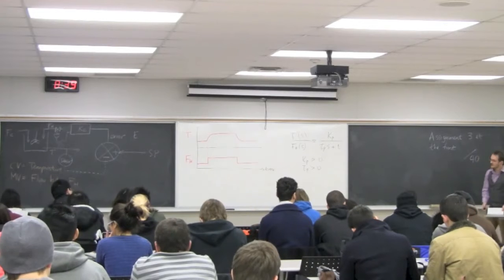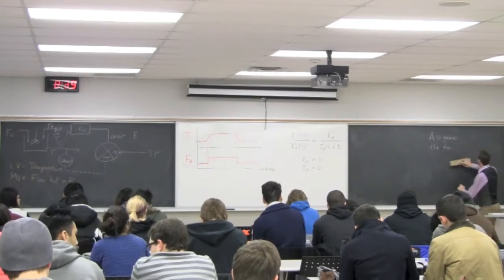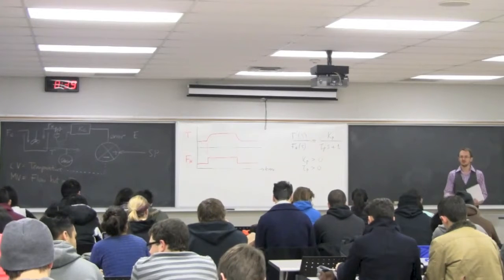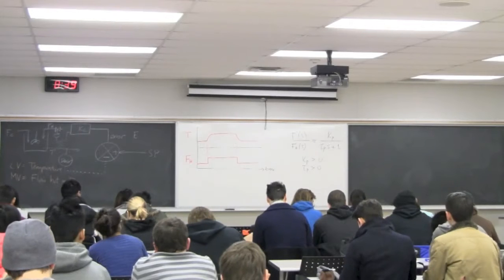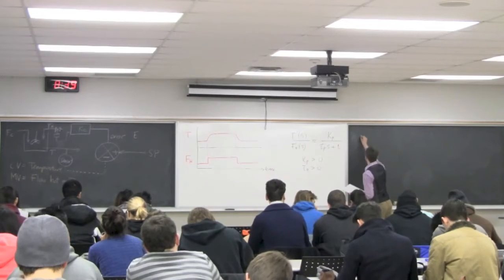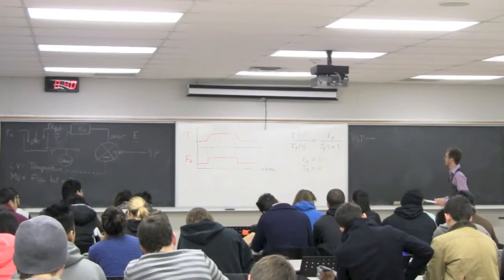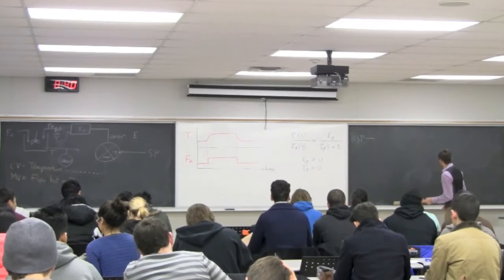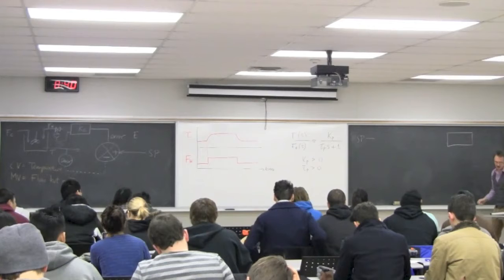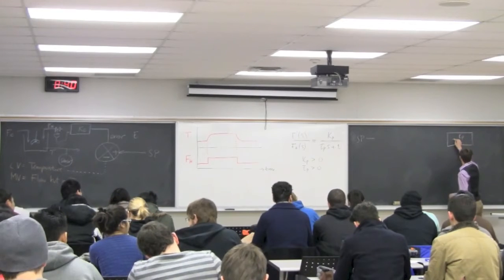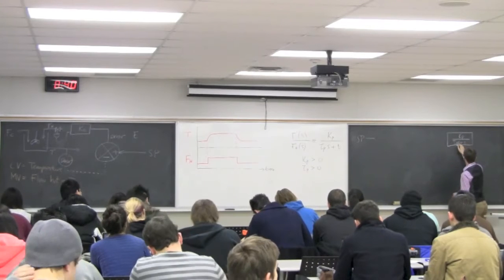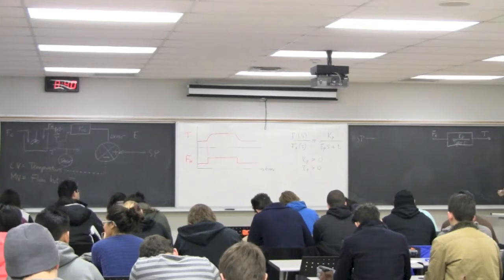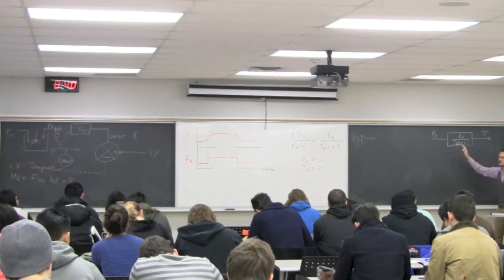We spent some of last class converting that over to a block diagram. There was some confusion around that, rightly so because this is the first time you encounter block diagrams. The emphasis on deviation variables is critical. I'm going to ask you to draw two copies of the block diagram. It's typically easiest to start by drawing the process block with gain Kp over tau-p s plus 1, with temperature T as output and FH as input.